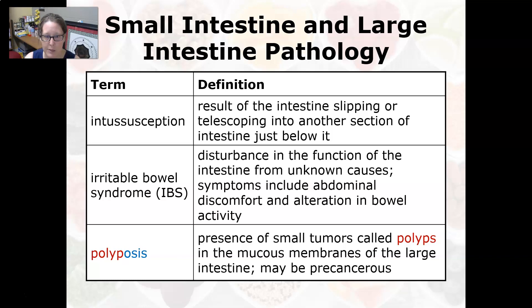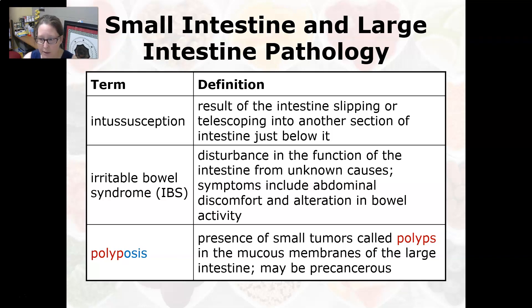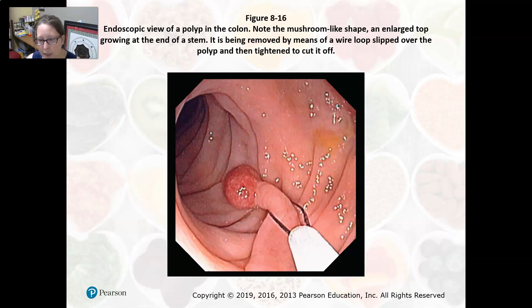IBS is kind of a catch-all term — having IBS could turn out to be diverticulitis, Crohn's, ulcerative colitis, or even celiac disease, so you should definitely get to the root of it. Polyposis is the presence of small tumors called polyps present in the mucous membrane of the large intestine; they could be precancerous. This is what they look for during a colonoscopy — a wire loop is used to cut the polyp off, to analyze it and remove it in case it turns into cancer.